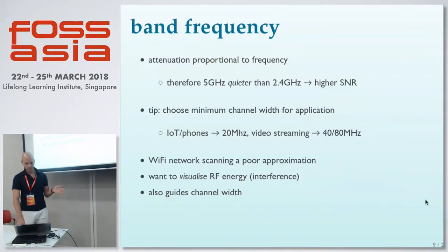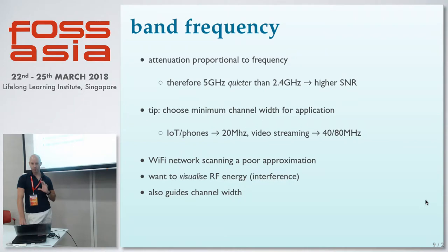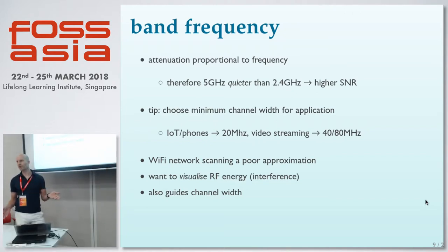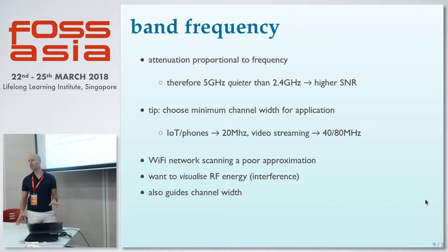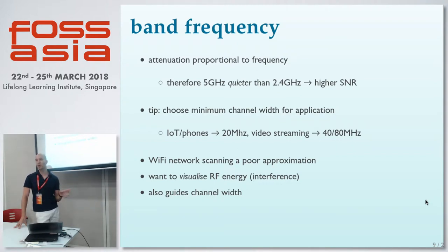At 5GHz you have more link headroom for your signals. But the wider the channel, the more interference with other channels. If you have VoIP phones, or you're browsing in certain environments like an internet kiosk, it definitely makes sense to choose narrower channels. In this conference Wi-Fi, channel width has been selected as 40MHz at 5GHz and 20MHz at 2.4GHz — there aren't any wider channels.